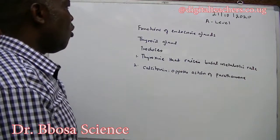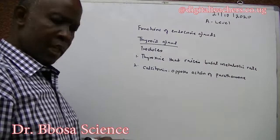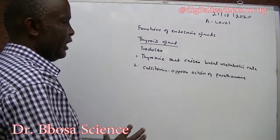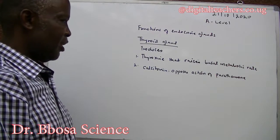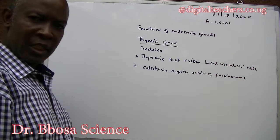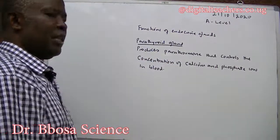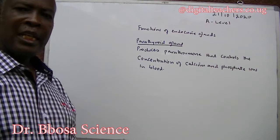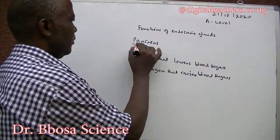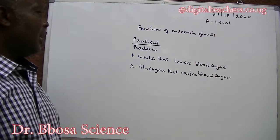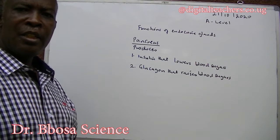The thyroid gland produces two hormones: thyroxin, which raises the basal metabolic rate, and calcitonin, which opposes the action of parathormone. The parathyroid gland produces parathormone that controls the concentration of calcium and phosphate ions in the blood. The pancreas produces insulin, which lowers blood sugar, and glucagon, which raises blood sugar.